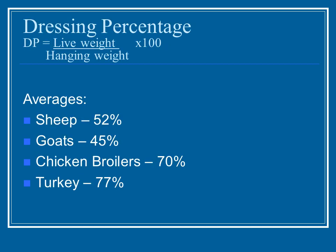We talked about dressing percentage in the last unit, but I wanted to go over it again because it is a really important part of understanding how much usable meat you will end up with from a live animal. This will help you in your final costing out and making your final plan. Dressing percentage is the live weight of the animal as it goes into the processor, divided by the hanging weight — that's the animal after it's been killed — times 100.